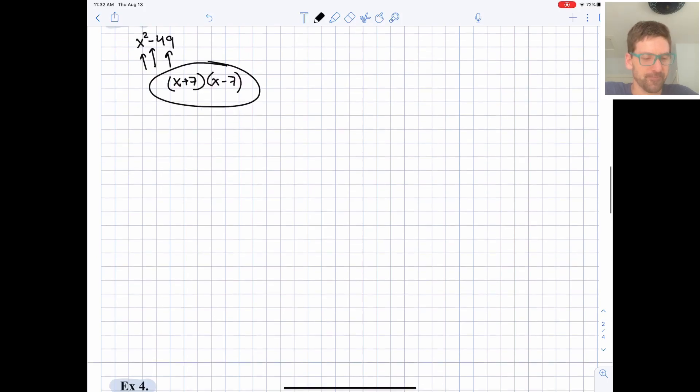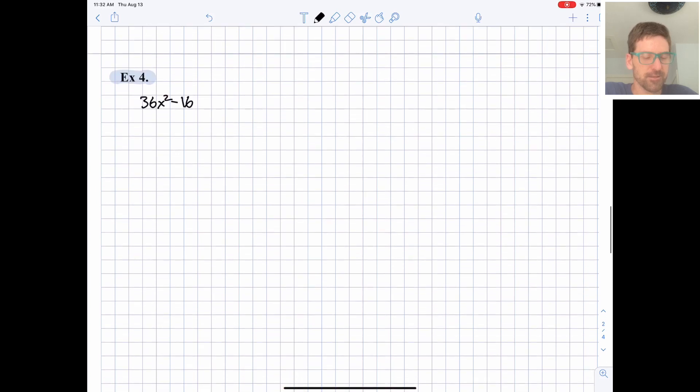This works also when we have a non-one in front of the x². Look for those as well. 36 is a perfect square, so is 16, so is x², and we have a difference right there. That's what subtraction means.